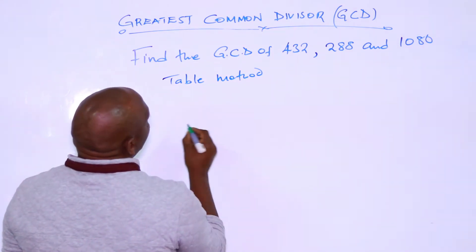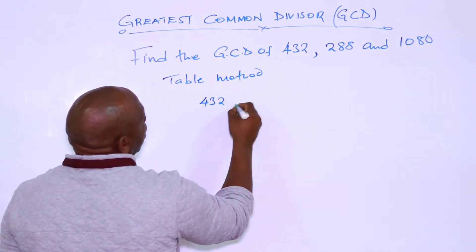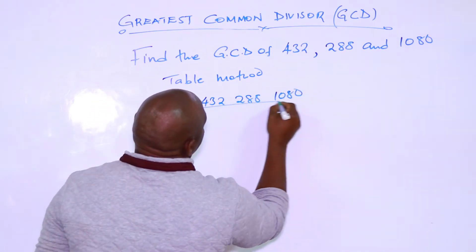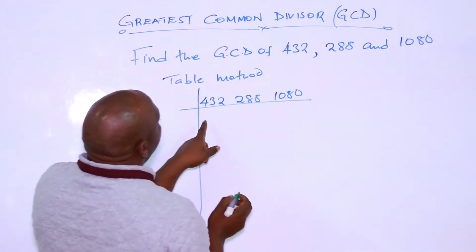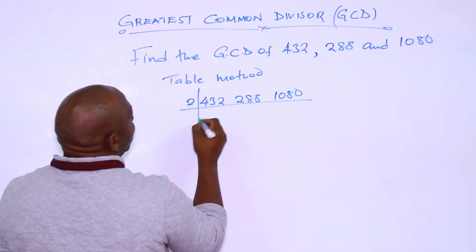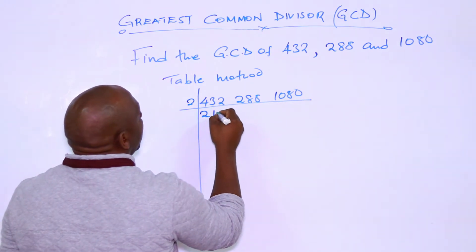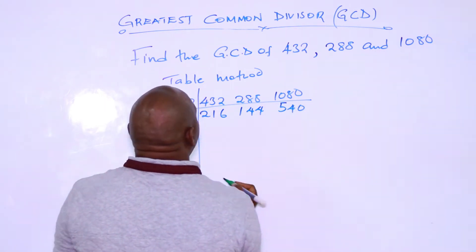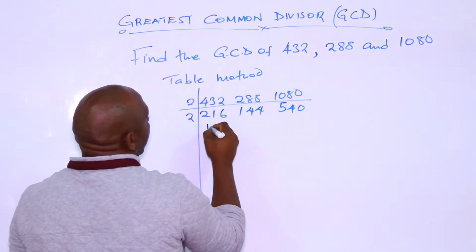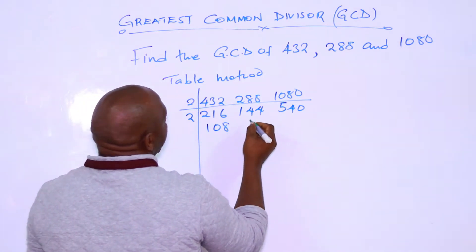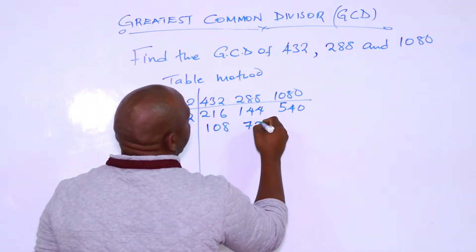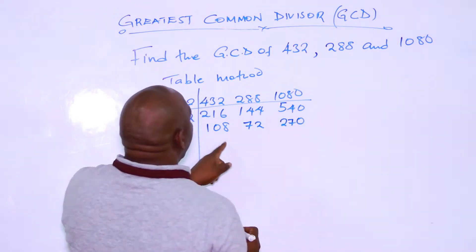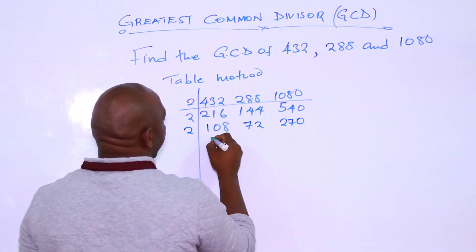In the table method, we take 432, 288, then we look for the common factor here, which is 2, to get 216, 144, and 540. Again, by 2, you get 108, 72, and 270. By 2, you get 54. By 2, you get 27.